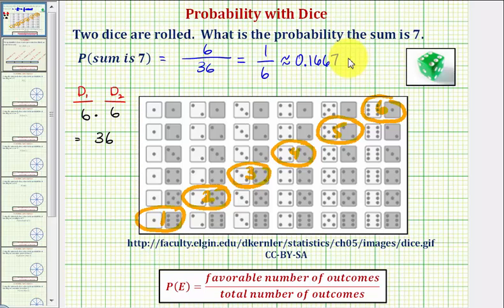To convert to a percentage, we multiply by one hundred and add a percent sign or move the decimal point to the right two places and add a percent sign, which would give us 16.67 percent.